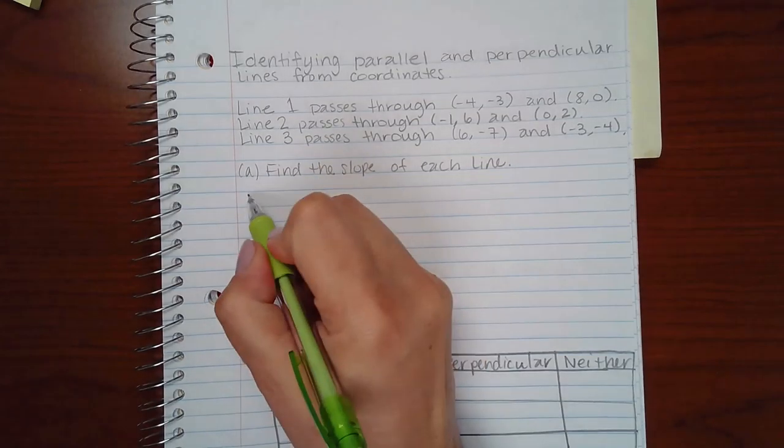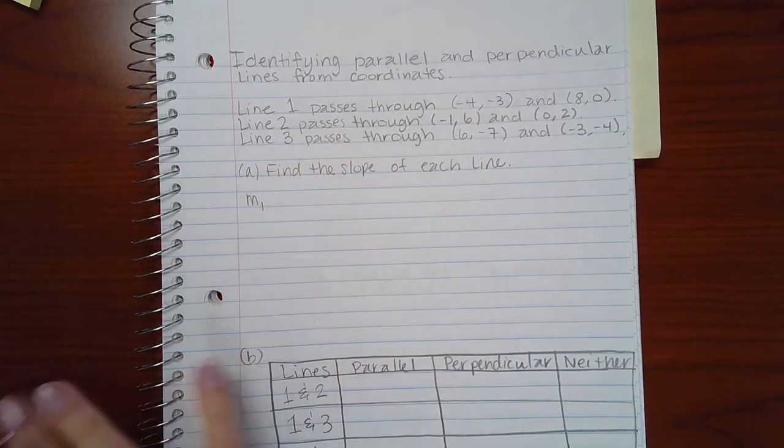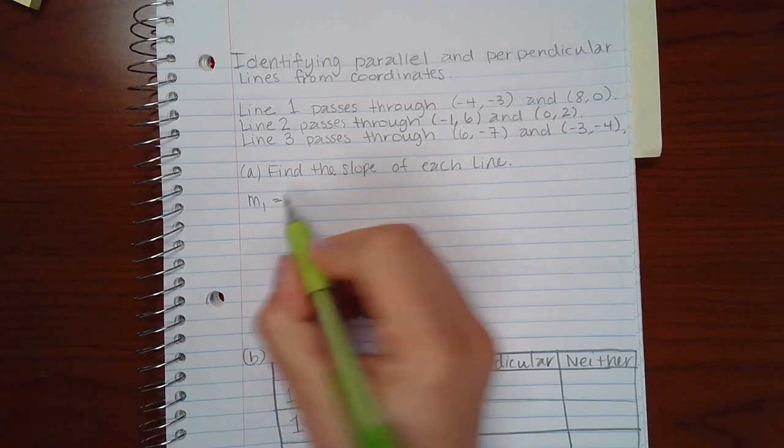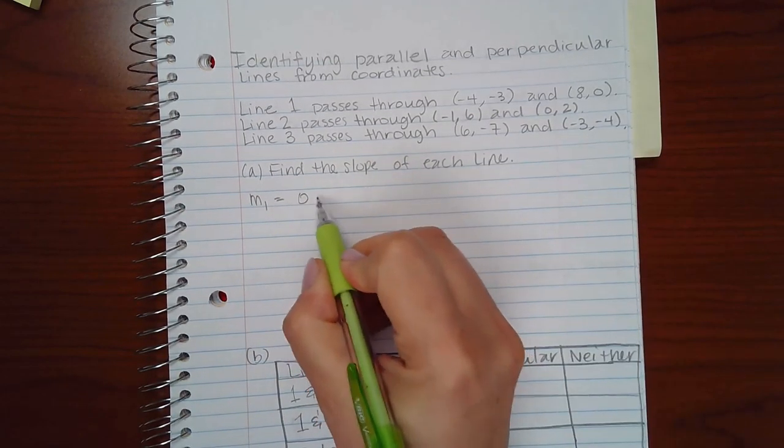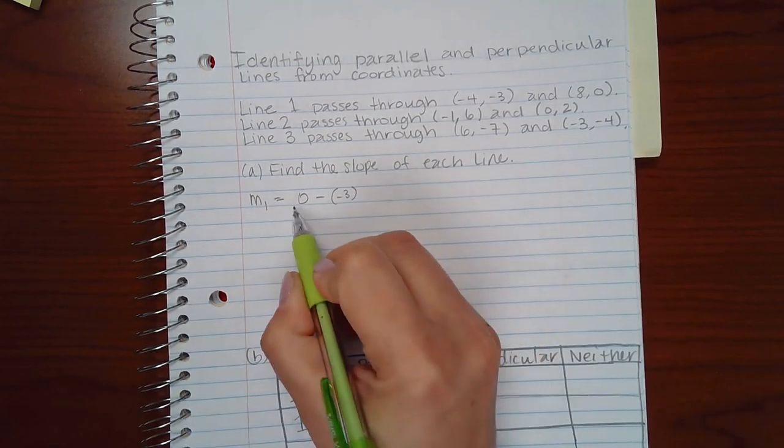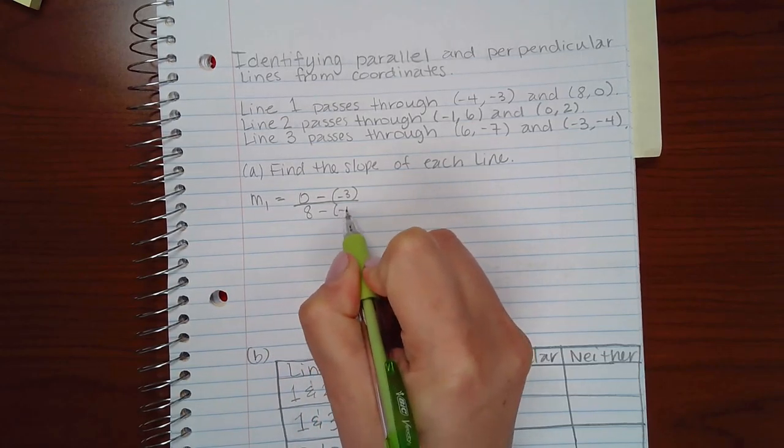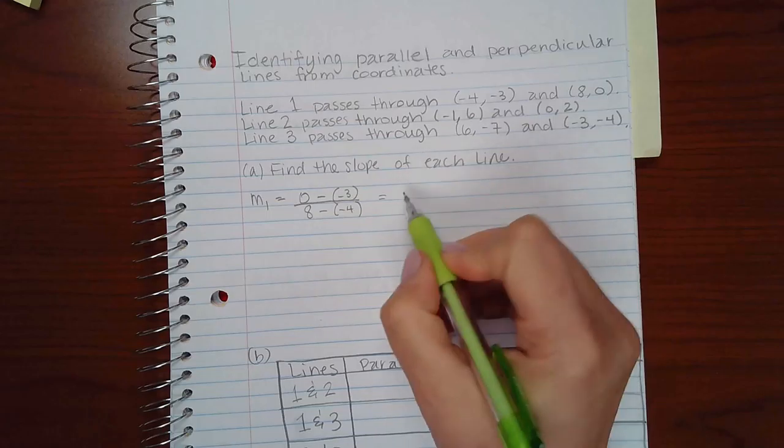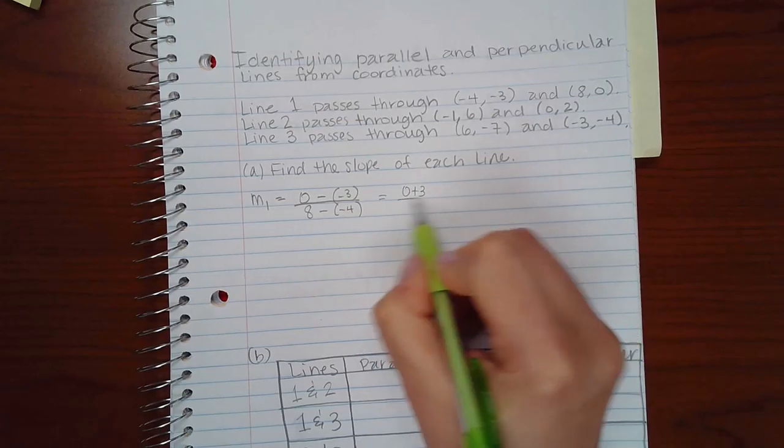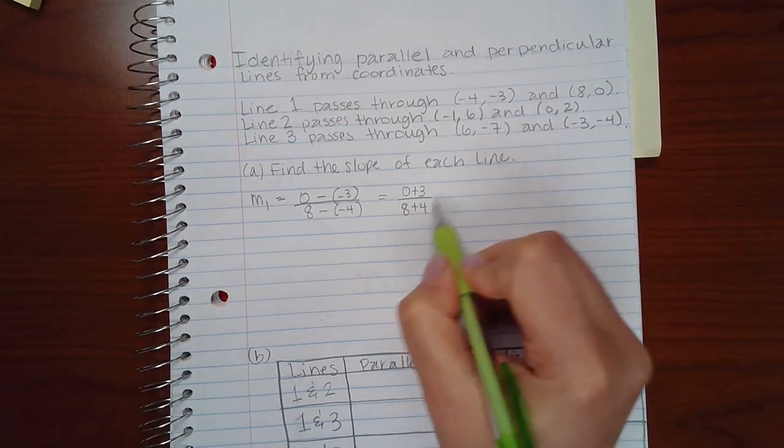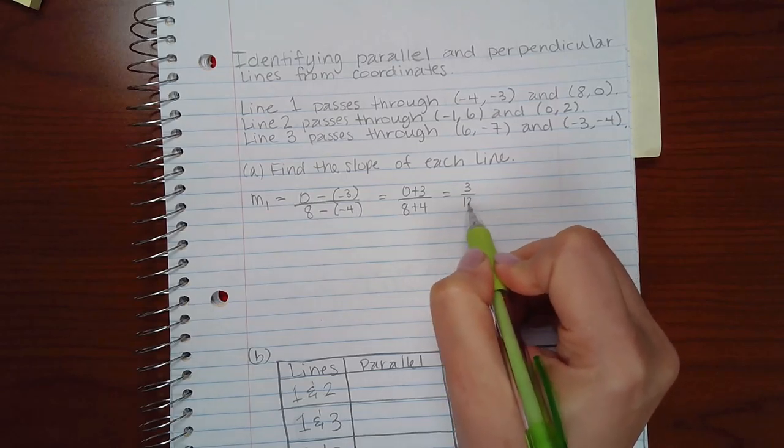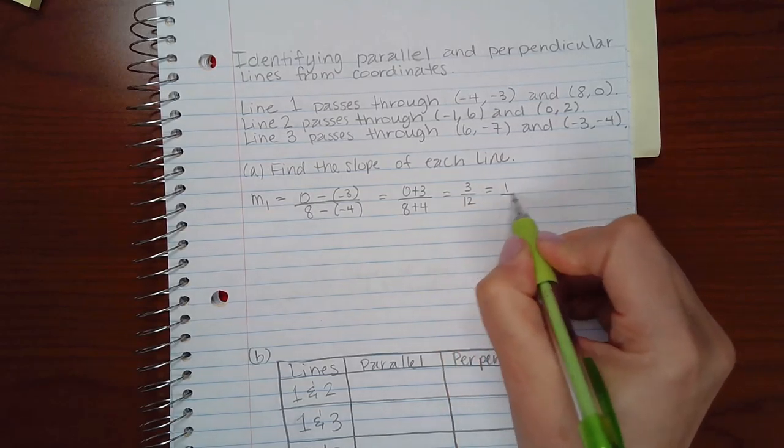If I want to find the slope of line one, I'm going to call that M1. So I have to do the second y value minus the first y value over the second x value minus the first x value. So I get zero plus three over eight plus four, which is three over twelve, and that reduces to one-fourth.